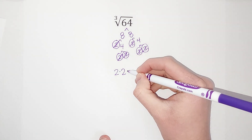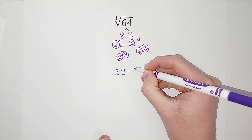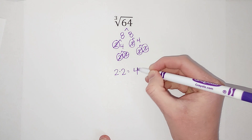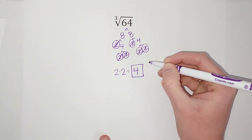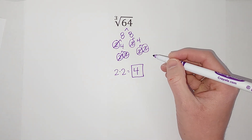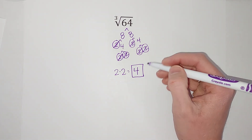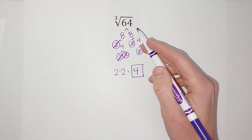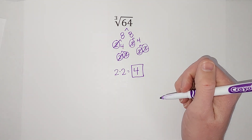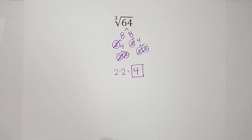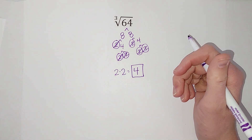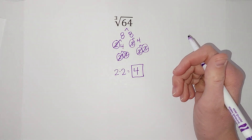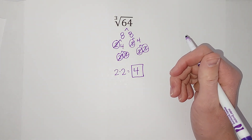When you pull things out, you multiply them together, so two times two gives me four. That is my answer. Four times four gives me 16, and 16 times four gives me 64. Hopefully that made sense. I will link a playlist with lots of other radical videos if you need them. Thanks!